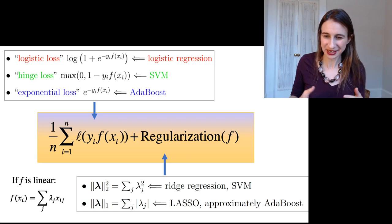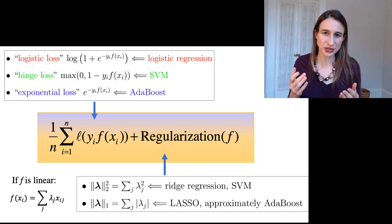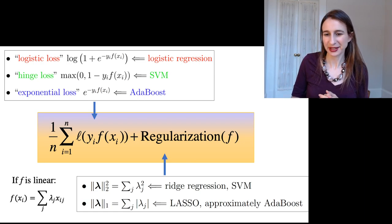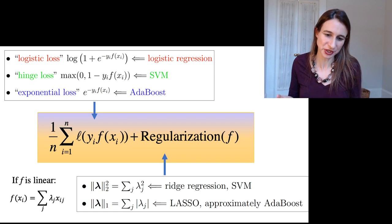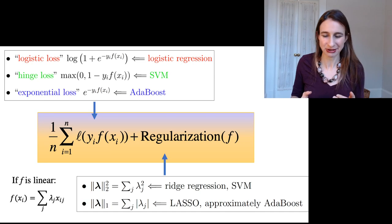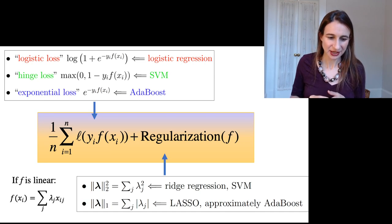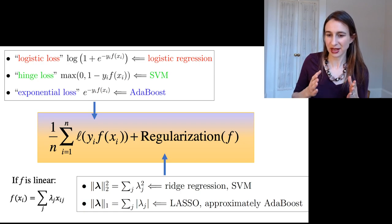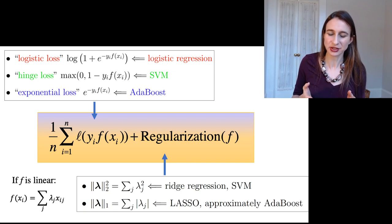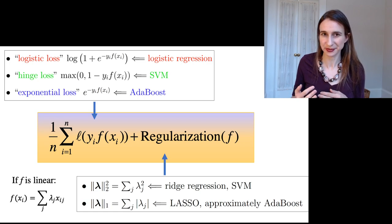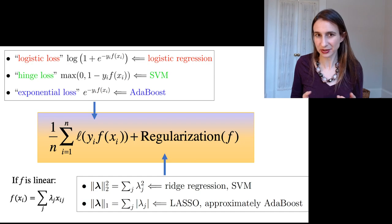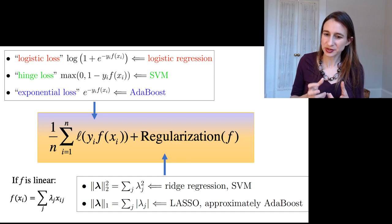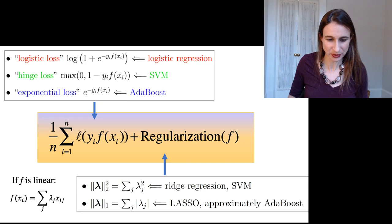And here you'd sometimes take the sum of the squares of the coefficients, and that's called L2 regularization, or it's also called a ridge penalty. And it's used in ridge regression and support vector machines. And then you could also take the sum of the absolute values of the coefficients to be the regularization term. And that's called L1 regularization that's used in the lasso algorithm, but also it's implicitly used in adaboost, as I'll describe when we get to the boosting lecture.